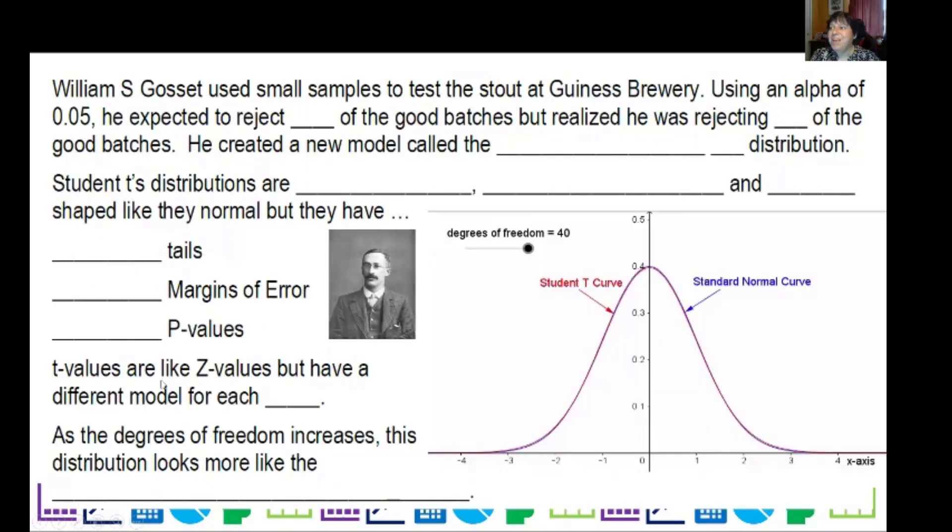So what does this go back to? Believe it or not, in a brewery. Some of you have probably heard of Guinness beer, good Irish beer if I recall. And he would use small samples to test the stout, which is a very heavy, filling drink. And he didn't want to drink a whole bunch, and I'm sure if the stout was ever bad, he really didn't want to drink it.